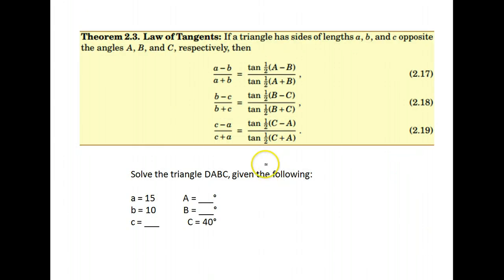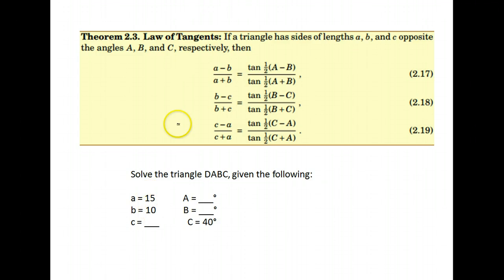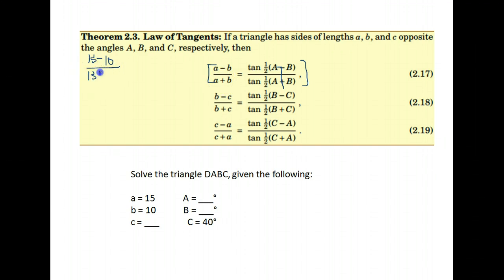So we used the law of tangents and were able to solve for those missing parts. I'm going to do one more example. Again, we are given two sides and the angle included between them — it's not opposite one of my sides. We're going to practice with the law of tangents and give it a chance. This time we were given sides A and B, so I'm going to use the formula that has A and B in it. We put in our values. A was 15 minus B, which was 10, over 15 plus 10. Equals the tangent of one-half of angle A minus angle B. We don't know either of those, so I just put A minus B. Over the tangent of one-half of A plus B — I don't know angle A and angle B, so I just put that for now.